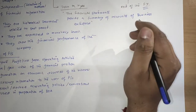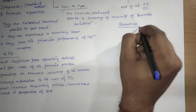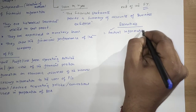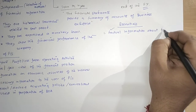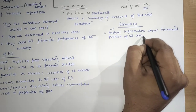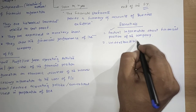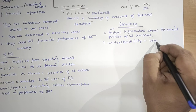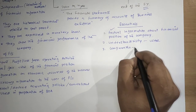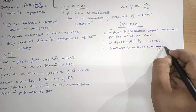Now let us discuss the essentials of financial statements. Number one, it must give factual information about the financial position of the company. Secondly, there is understandability — it should be easily understood by the users of the financial statement. Third, it must be comparable, meaning the user may compare two financial years.